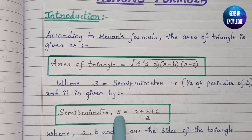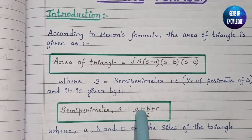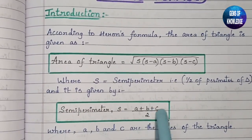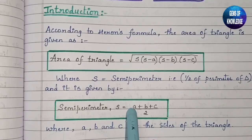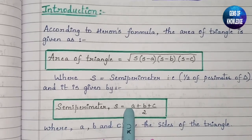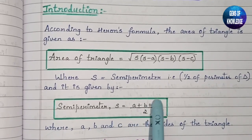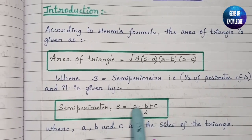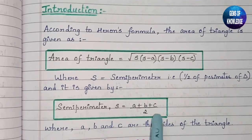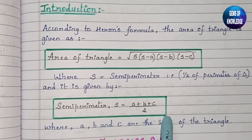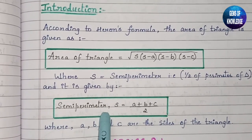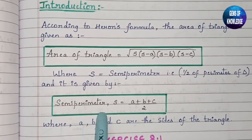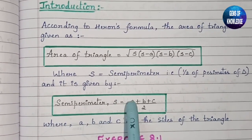The semi-perimeter S is equal to (A plus B plus C) divided by 2. The perimeter of the triangle is A plus B plus C, and when divided by 2 it gives us the semi-perimeter.